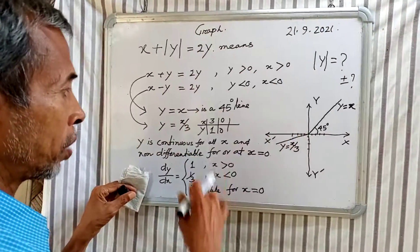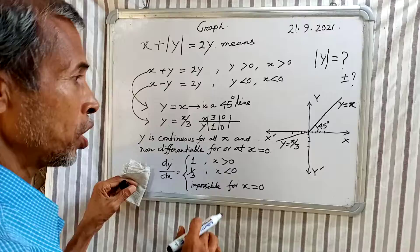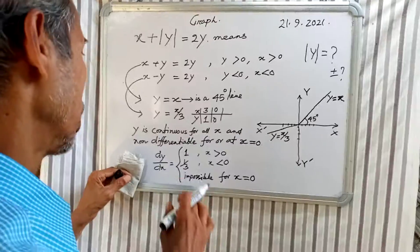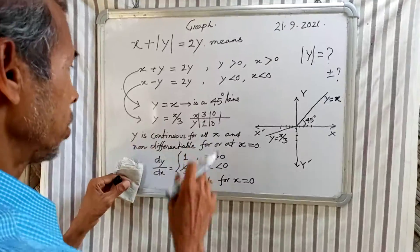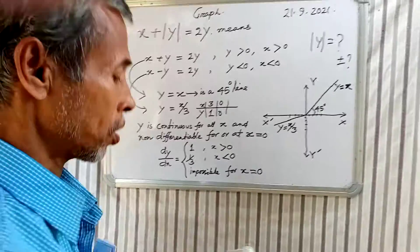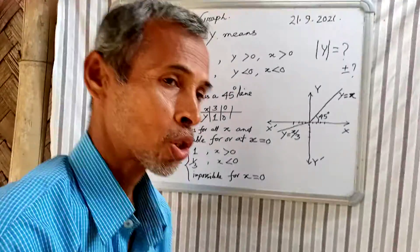This chapter is on continuity. y is continuous. Namoshkar — dy by dx.